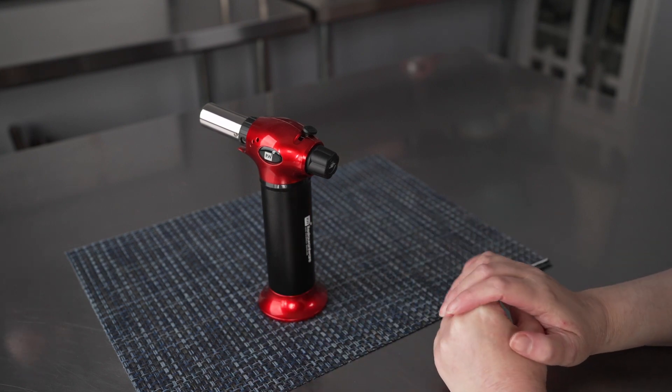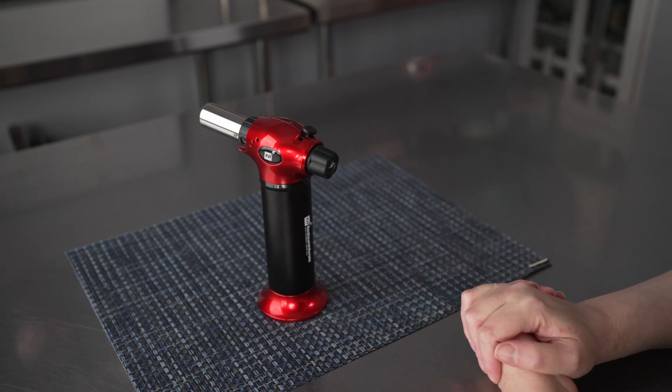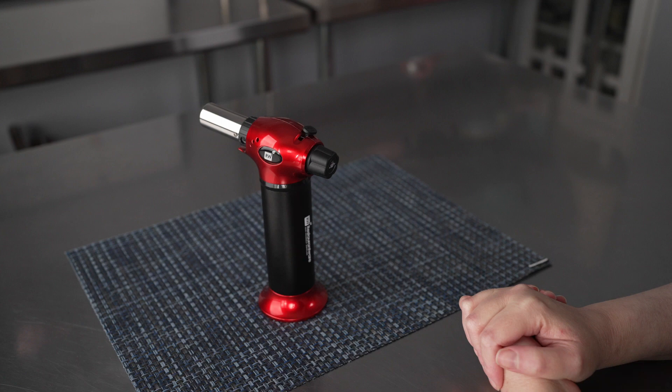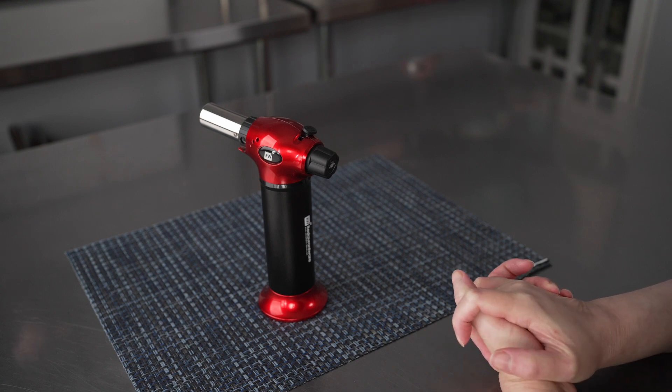So this is going to be great for caramelizing things like creme brulee, toasting the tops of marshmallows perfectly, or the meringue on top of a pie, for doing things like melting cheese on top of a burger really quickly, or even searing meats if you're into things like sous vide.